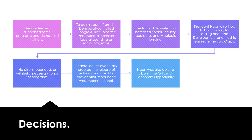Nixon also impounded or withheld necessary funds for certain programs. Federal courts eventually ordered the release of these funds and ruled that presidential impoundment — the presidential withholding of funds for certain programs — is unconstitutional. But Nixon was able to abolish the Office of Economic Opportunity.